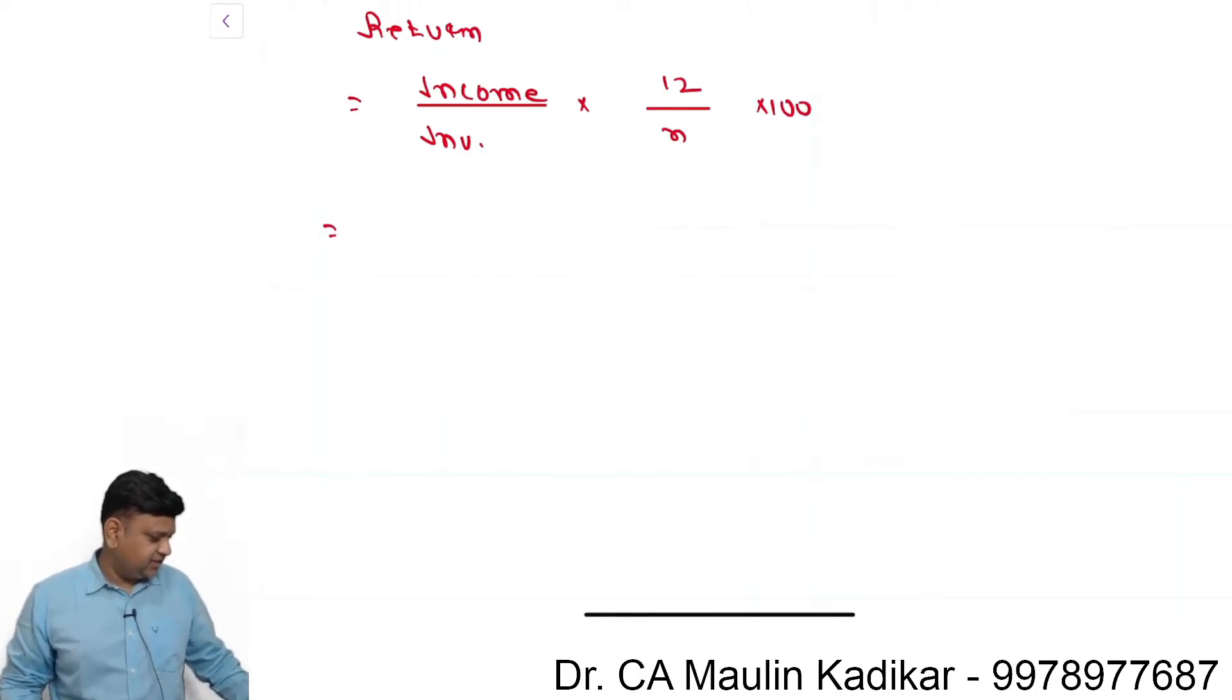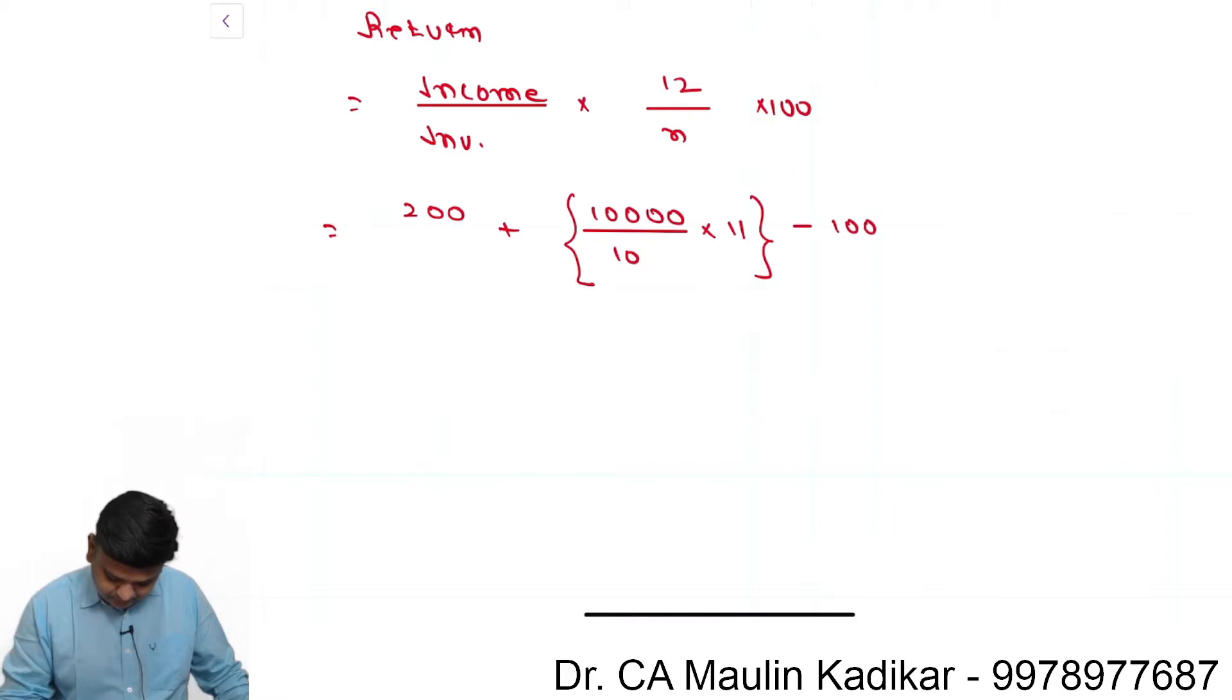Question says that the investor has received dividend of ₹200 plus, when we made investment NAV was ₹10, now the NAV is ₹11, whole divided by 10,000 into 100 into 12 divided by 5.